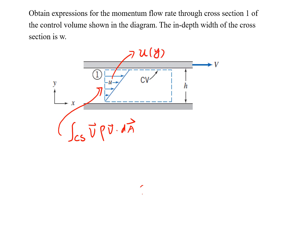Based on the information we have: when y equals h, velocity equals V because of the no-slip boundary condition. And when y equals zero — at the bottom — velocity must be zero. In between, based on the velocity profile, we know that velocity changes linearly with y. As a result, u(y) is a linear function of y with a slope of V over h, giving us u(y) = (V/h)·y.